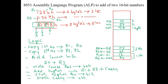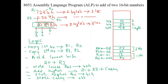Now we will relate this to 8051 instructions. There are two add instructions. The first addition of the lower byte is done using the ADD instruction. The second addition of the higher byte, which includes the previous carry, is done using the ADDC instruction — that is ADD with Carry. Copying numbers and storing results are all done using the MOV instruction.